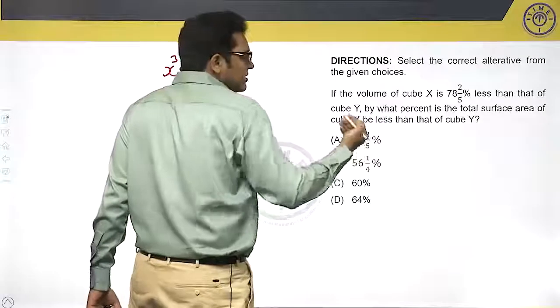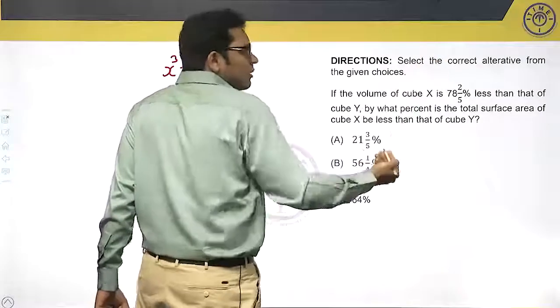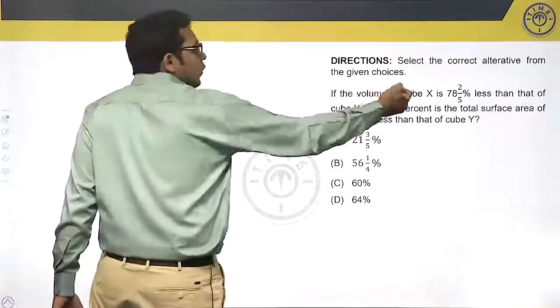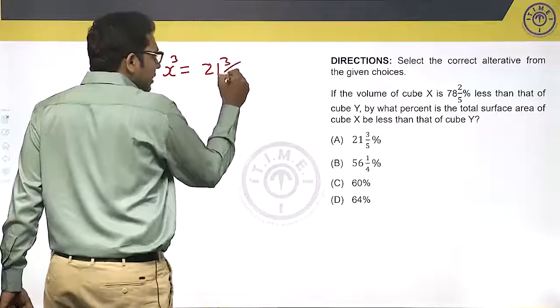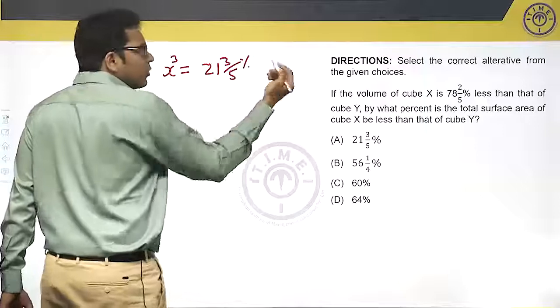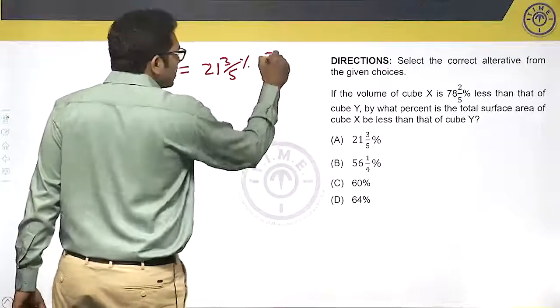78 2/5 percent less is nothing but 1 minus 78 2/5 percent, which is 21 3/5 percent of volume of cube Y, which is y³.